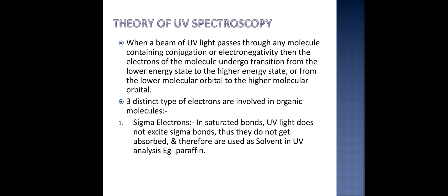What are the theories of UV visible spectroscopy? The general theory is that when a beam of UV light passes through any molecule containing conjugation between stable bonds or transfer of electrons or electronegativity, then the electrons of the molecule undergo transition from lower energy state to the higher energy state or from the lower molecular orbital to the higher molecular orbital. Here three distinct types of electrons are involved in organic molecules.